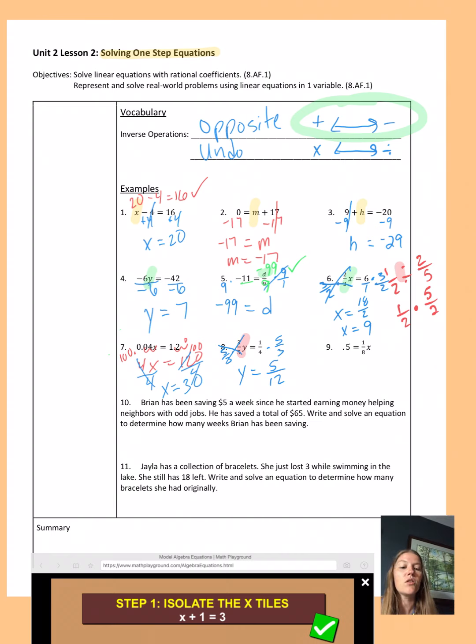On number 9, I've got a decimal and a fraction. So I could do either way and turn them both into fractions, both into decimals. But I recognize right away that 0.5 is the same as 1 half. So I'm going to go ahead and change that. So then I have my variable being multiplied by 1 eighth. So the opposite is to multiply by the reciprocal. And that's going to cancel out that and leave me just x. And then I'm going to go ahead and unlike number 6 where I reduced at the end, I'm going to reduce at the beginning.